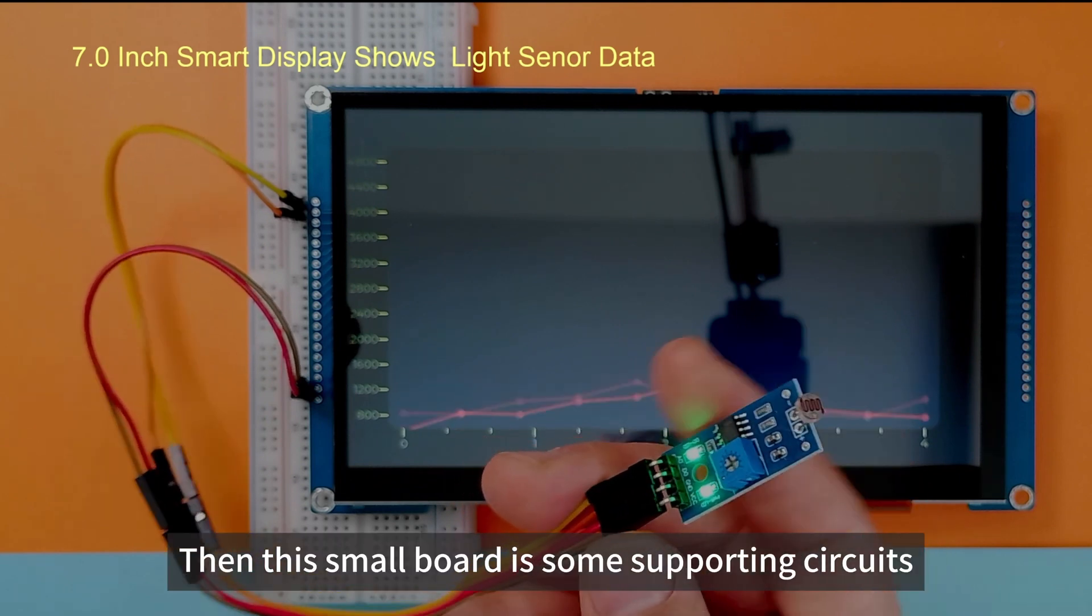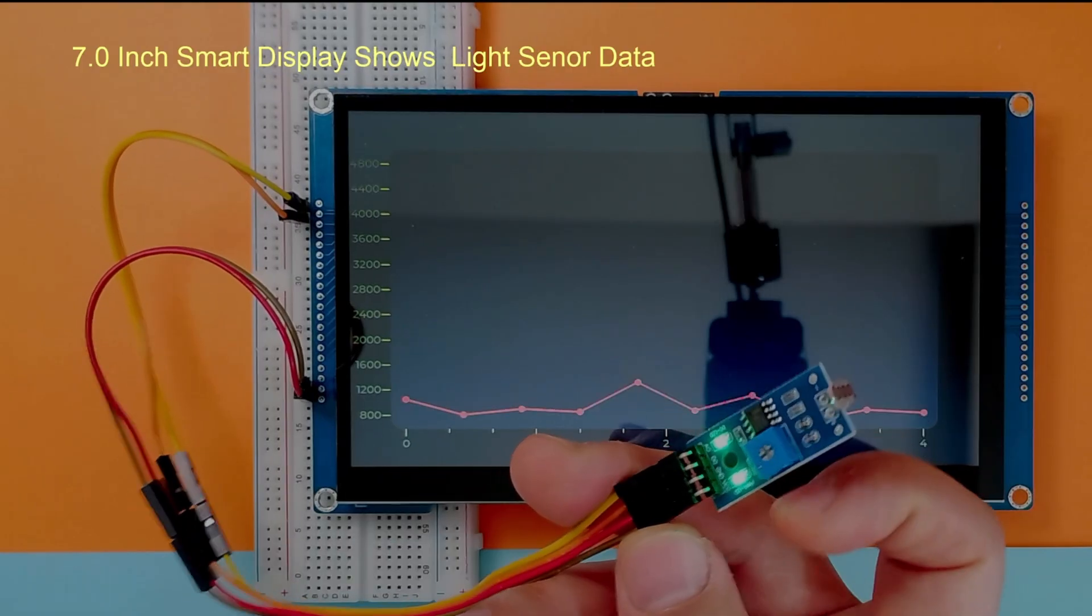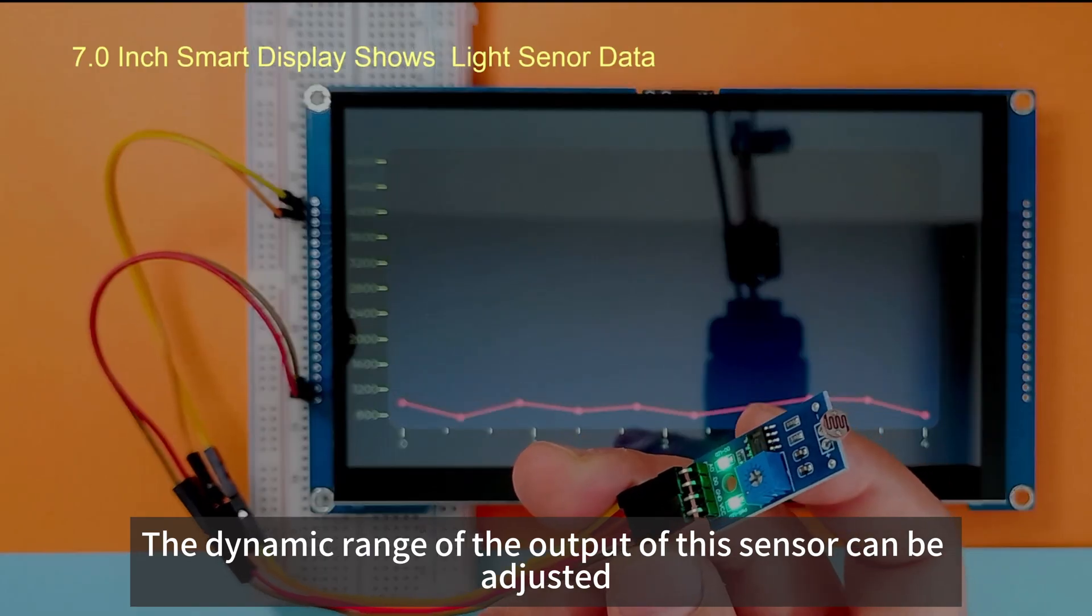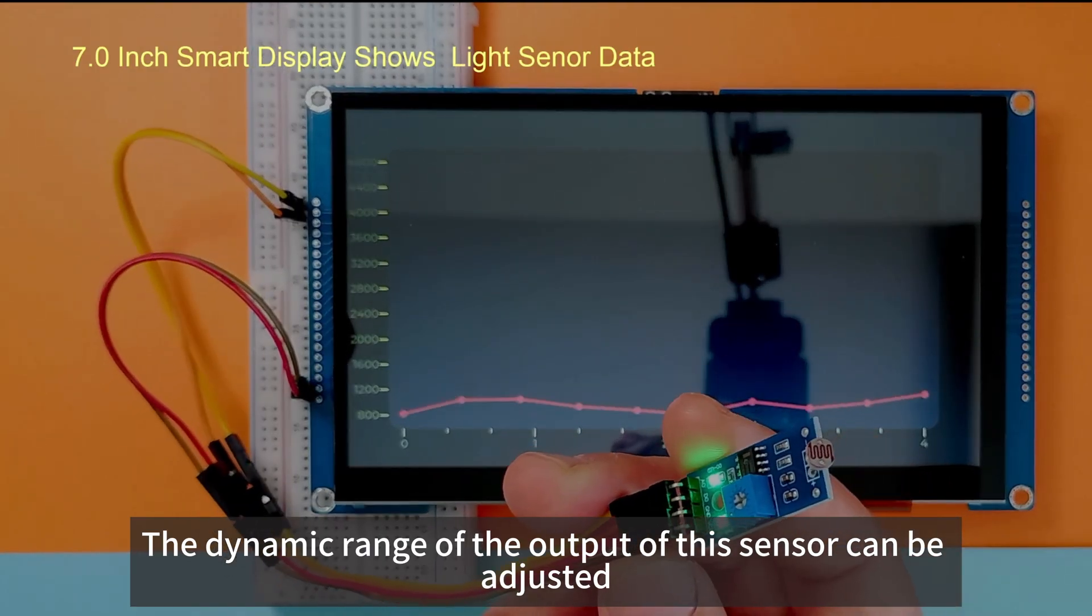Then this small board has some supporting circuits. You can see that there is an adjustable device. The dynamic range of the output of this sensor can be adjusted.